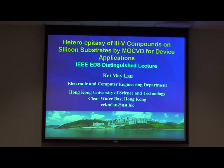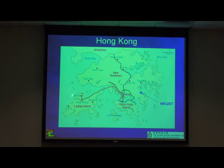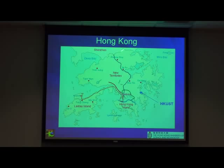Here is a map of Hong Kong. This is the airport and this is Hong Kong Island that you see most of the pictures from. We are here at this east bay facing the Pacific Ocean — of course there are some islands in between. Our campus is on the east side, about half an hour by car or train. Hong Kong is really tiny, and this is the border between Hong Kong and China.